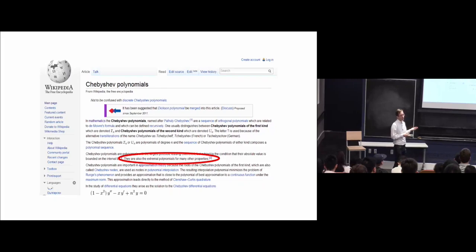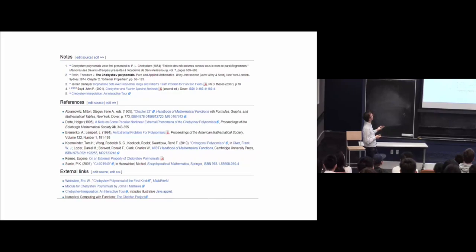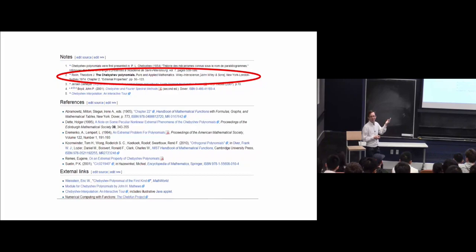And you're like, oh, they're extremal polynomials with many other properties. And there's a citation too. And you're like, oh, too. It's this book, the Chebyshev polynomials by Theodore Rivlin, published in 1974. And you can see, okay, you can get the solution out of this book.